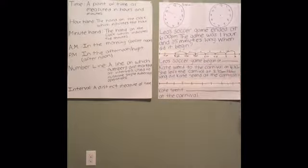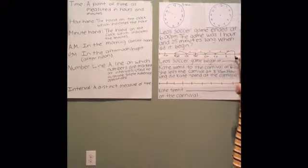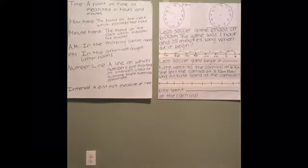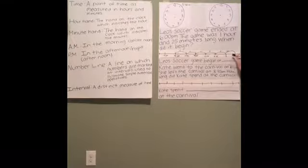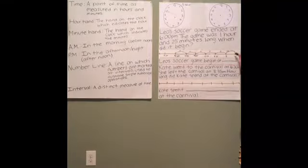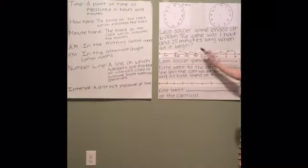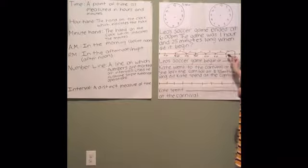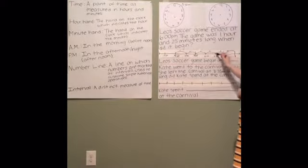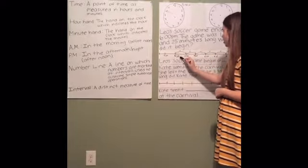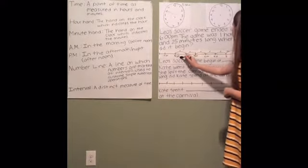So we're going to check our answer again and make sure we have the right answer. Once again, we have 6 p.m. as our starting point, and we go backwards because we have the ending time instead of the beginning time. We jump an hour to 5, so we already have the 1 hour accounted for. And now we keep going until we reach the 25 minutes: 5, 10, 15, 20, 25. And once again, we've landed on 4:35.